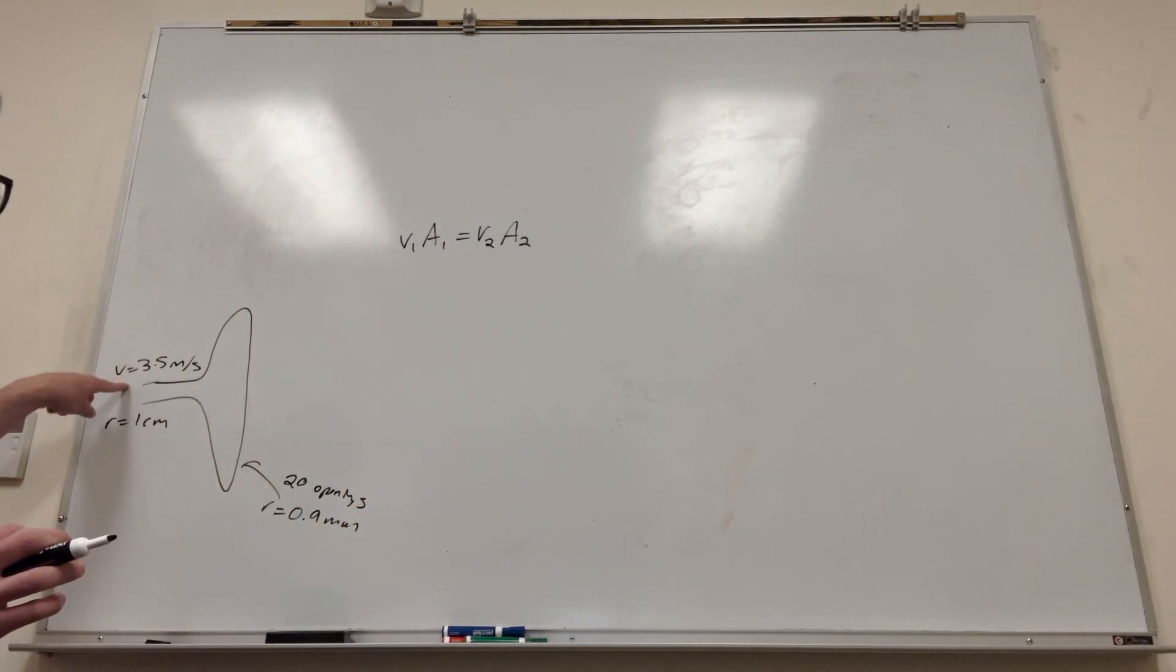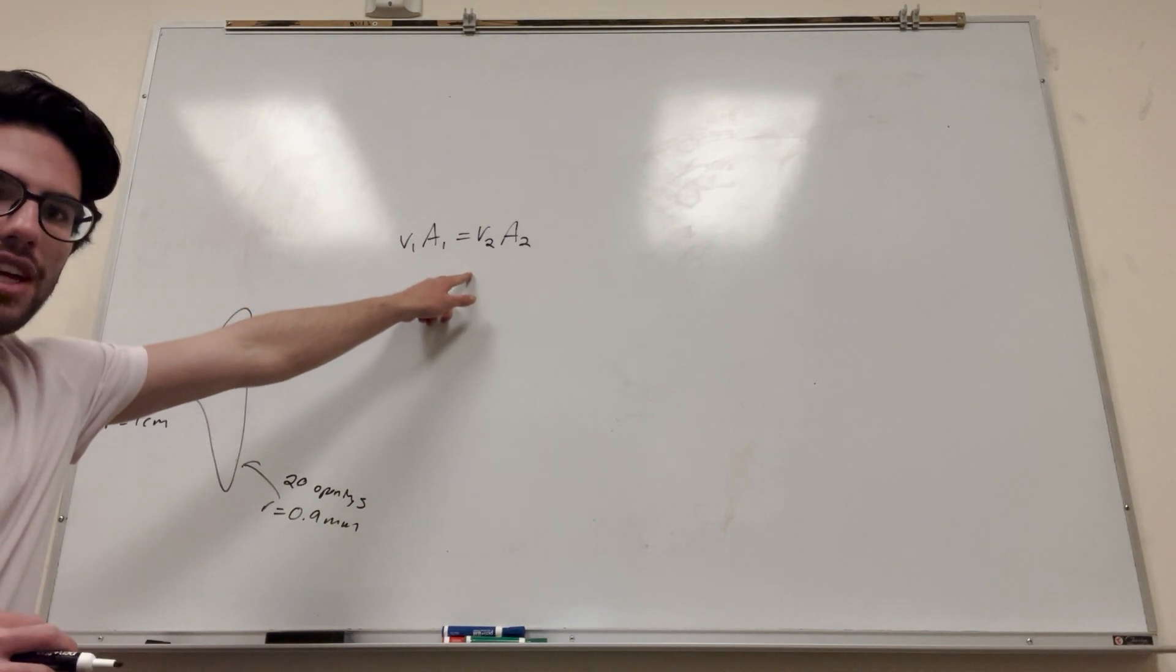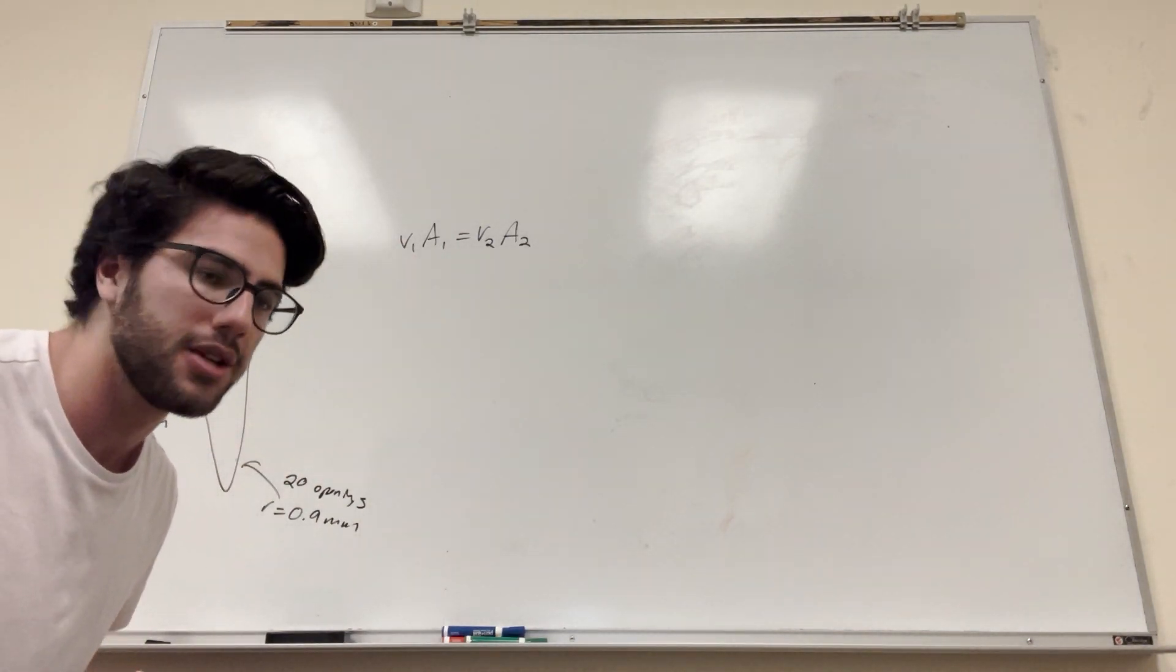We have the velocity of 1, and we can calculate the area of 1. We can calculate the area of 2, and we're trying to find the velocity of 2. So of course, all we're going to need to do is find these areas.